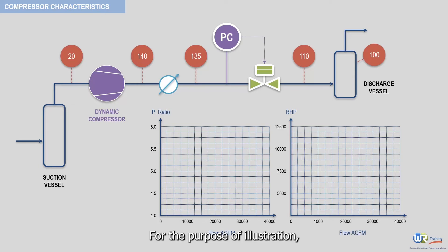For the purpose of illustration, let's assume an inlet volume flow of 20,000 and a brake horsepower of 10,000. Let's now plot the flow versus pressure ratio and the BHP on the appropriate graphs.